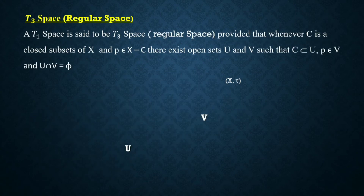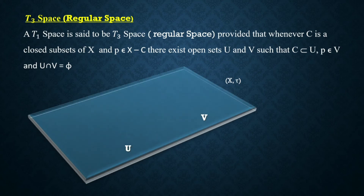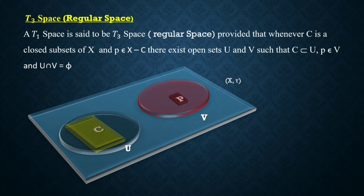The next definition is T₃ space, or regular space: a T₁ space is said to be T₃ provided that whenever C is a closed subset of X and a point p belongs to X minus C (that is, outside the closed set), there exist open sets U and V such that C is a subset of U, p belongs to V, and U and V are disjoint. Suppose the space is a topological space, let C be a closed set and p be a point outside C; the space is regular provided there exist two disjoint open sets U and V such that C is a subset of U and the point p belongs to V.